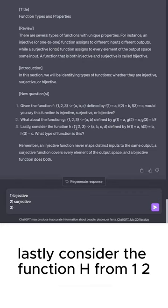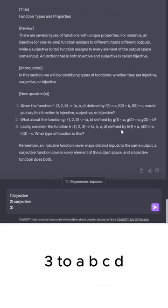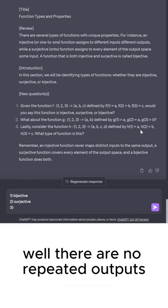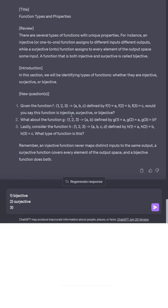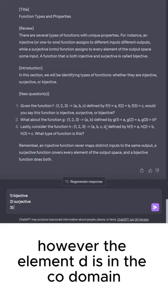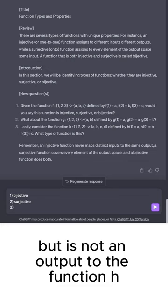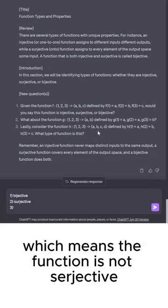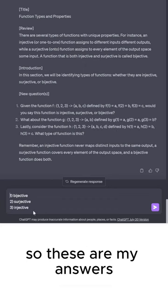Lastly, consider the function h from {1, 2, 3} to {a, b, c, d}, defined by h(1) = a, h(2) = b, h(3) = c. What type of function is this? Well, there are no repeated outputs, and so that means the function is injective. However, the element d is in the codomain, but is not an output to the function h, which means the function is not surjective.